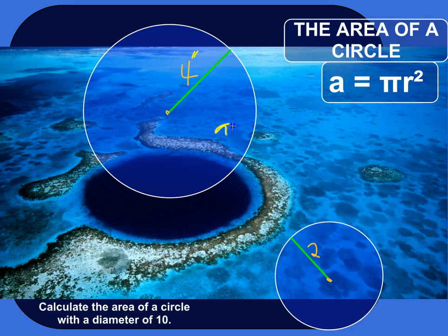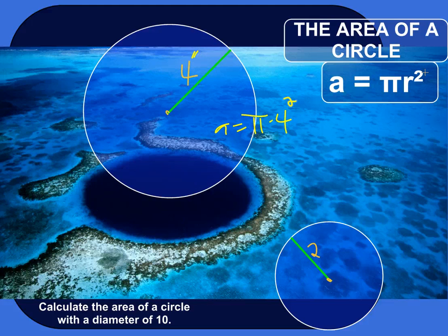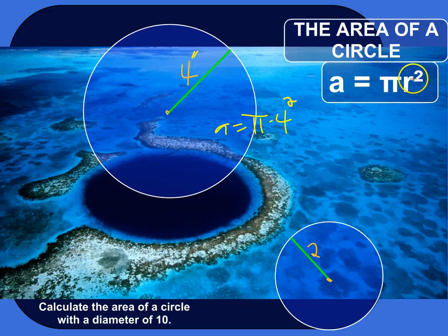So the area of this circle would be pi, which is roughly 3.14, times the radius, in this case 4, squared. And the way I remember this formula, pi r squared, is I say, hey, pi aren't squared, they're round. I don't know, it's kind of cheesy, it helps me though, like pi like you eat.